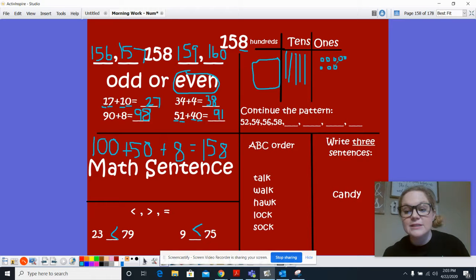All right. 52, 54, 56, 58. We're counting by 2. So next would be 60. Then we have 62, 64, 66.